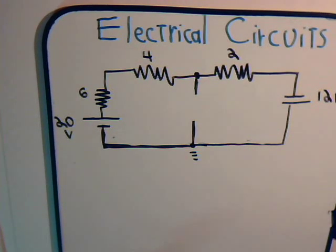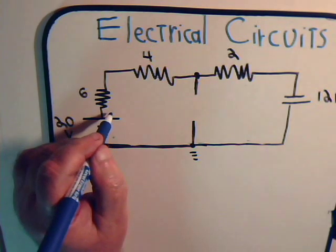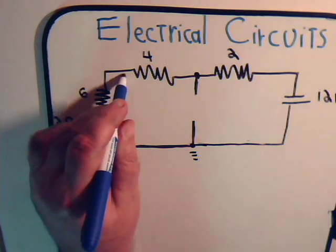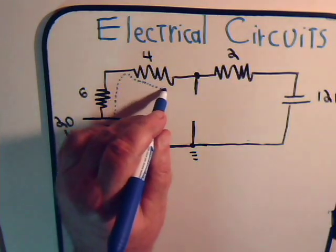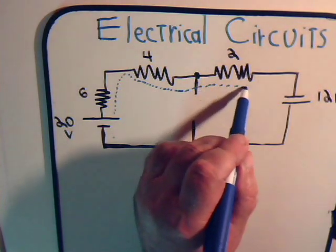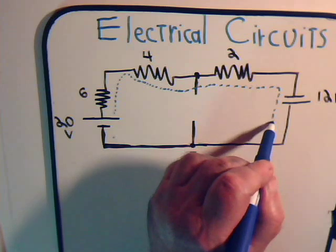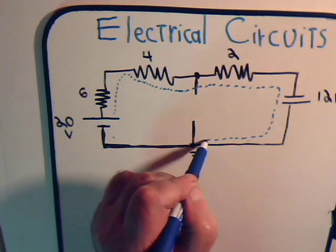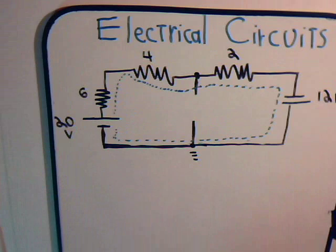Now what we do is we form a super mesh current starting from right here where I1 began, and the super mesh current continues like this, goes right on through, and returns to the starting point. This is our super mesh current now.